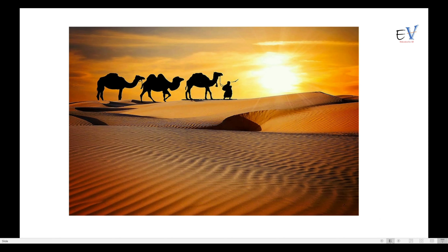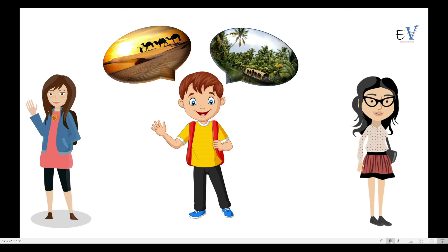Ravi smiled and said, 'But you also get to see camels, the ship of the desert.' Now Ravi started thinking: at one place it rains so much, and at another it doesn't rain at all.